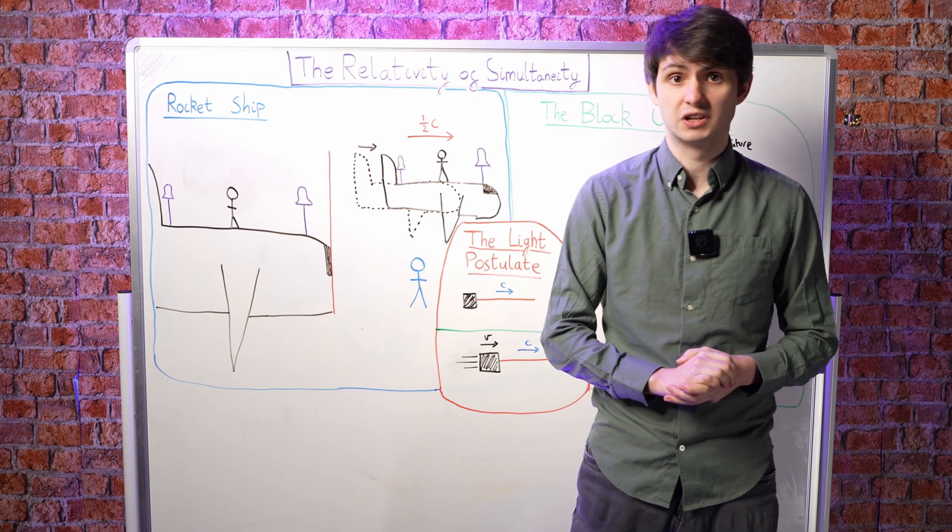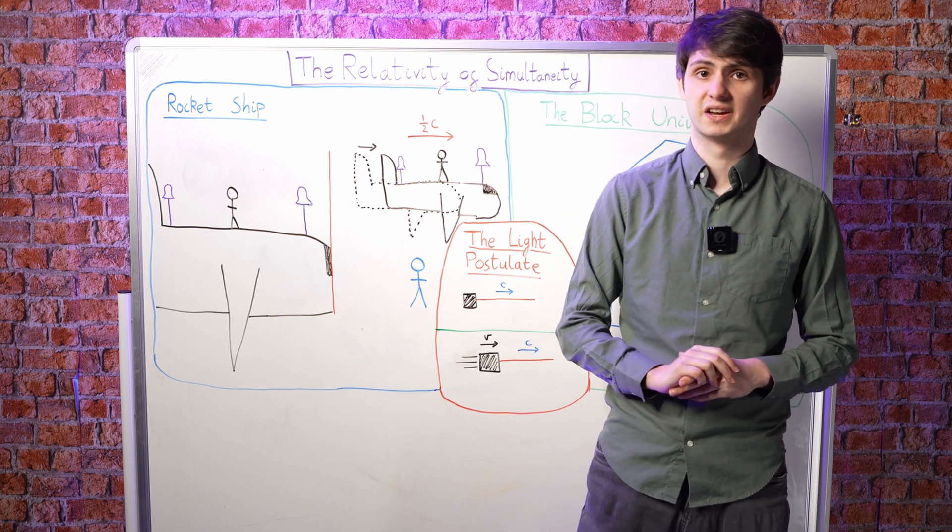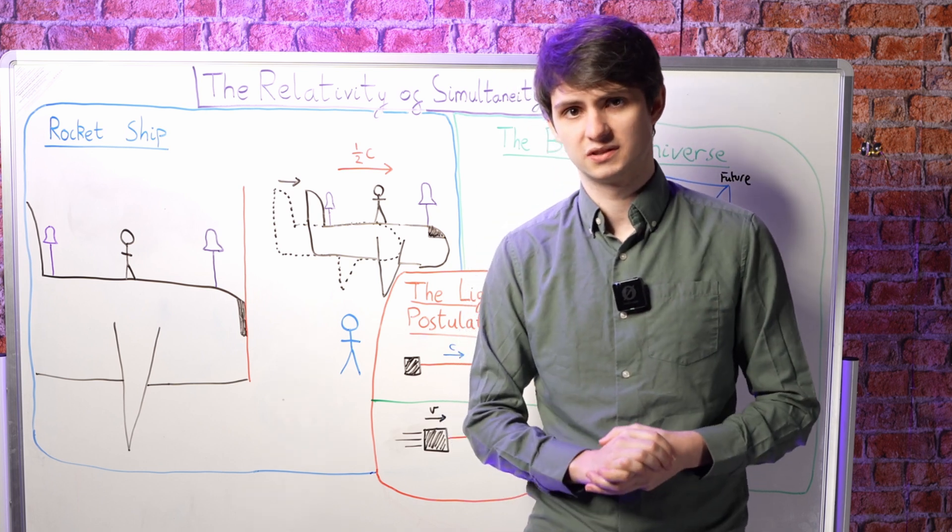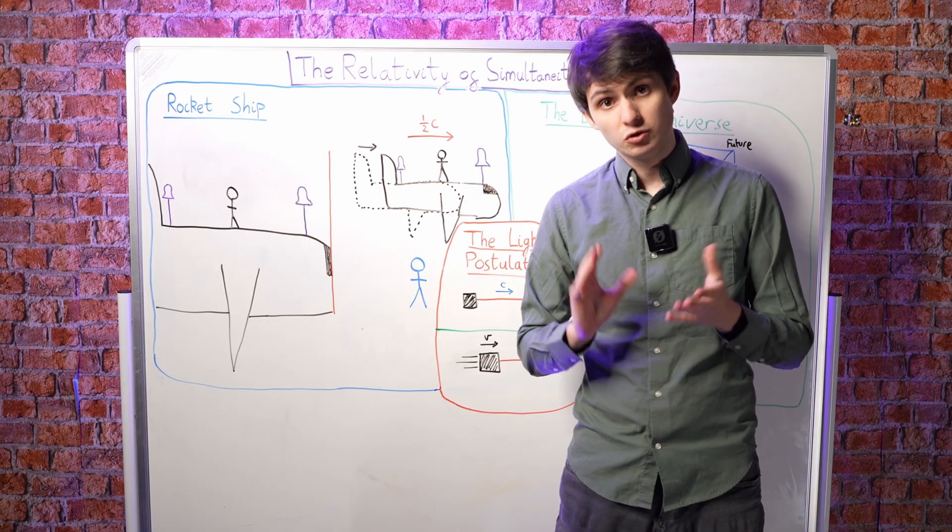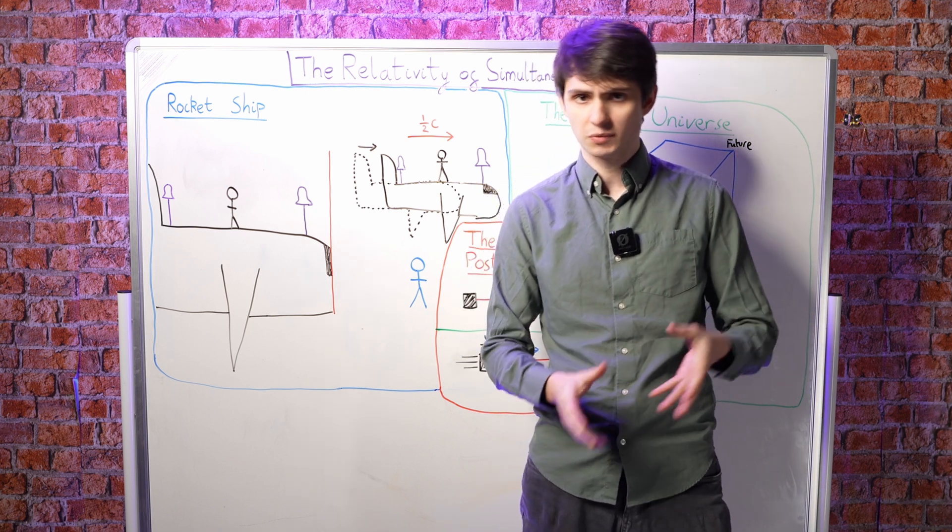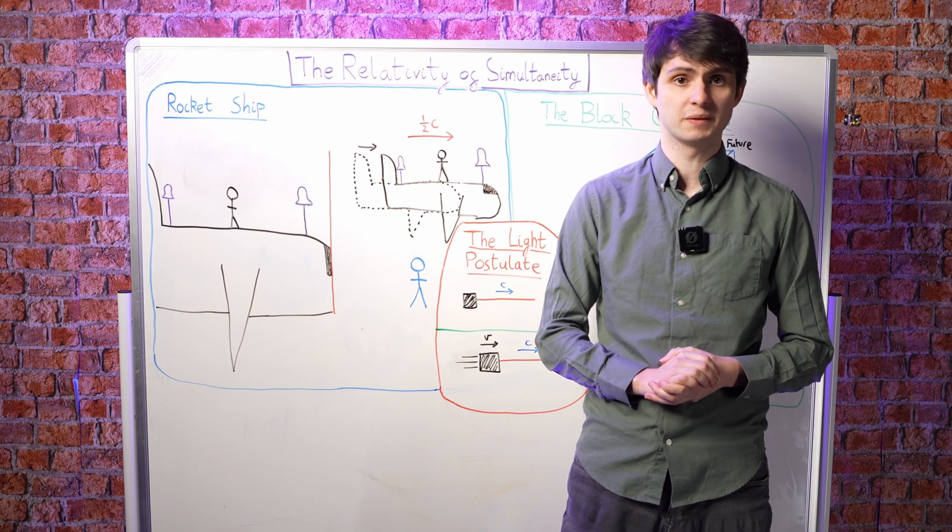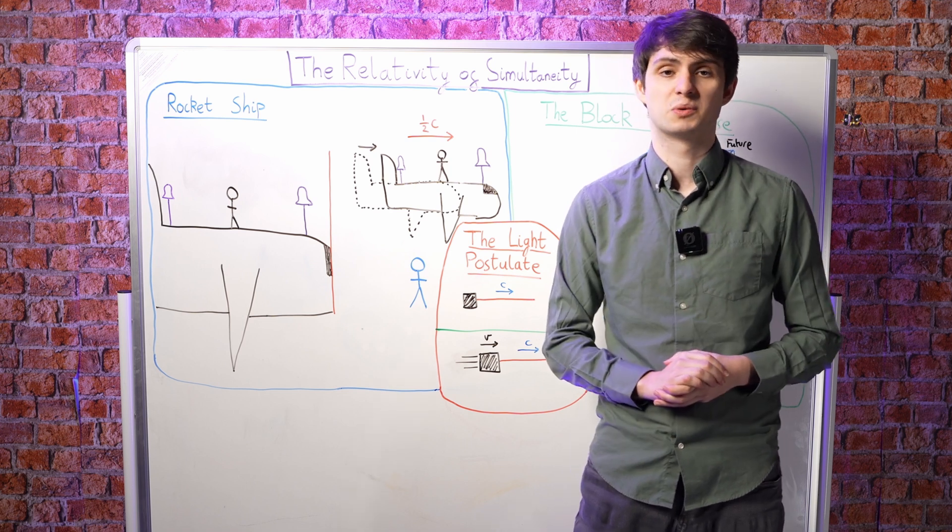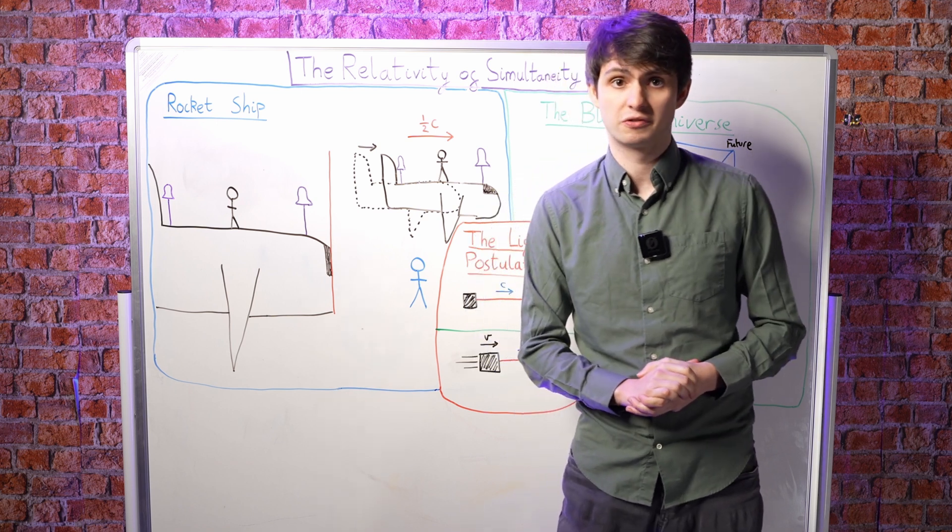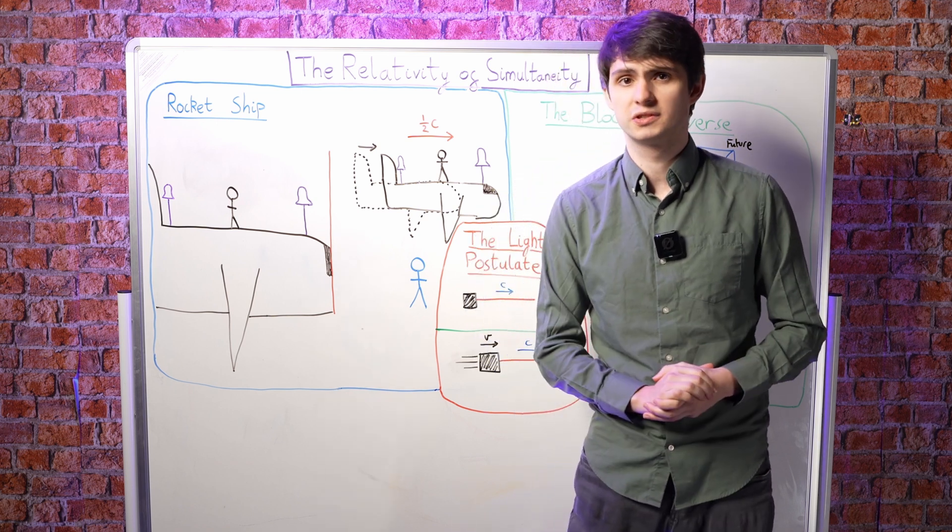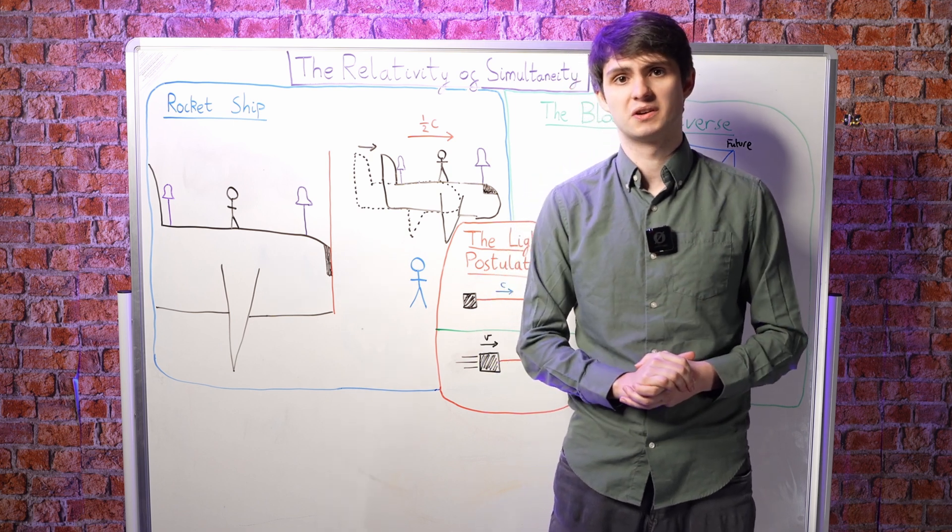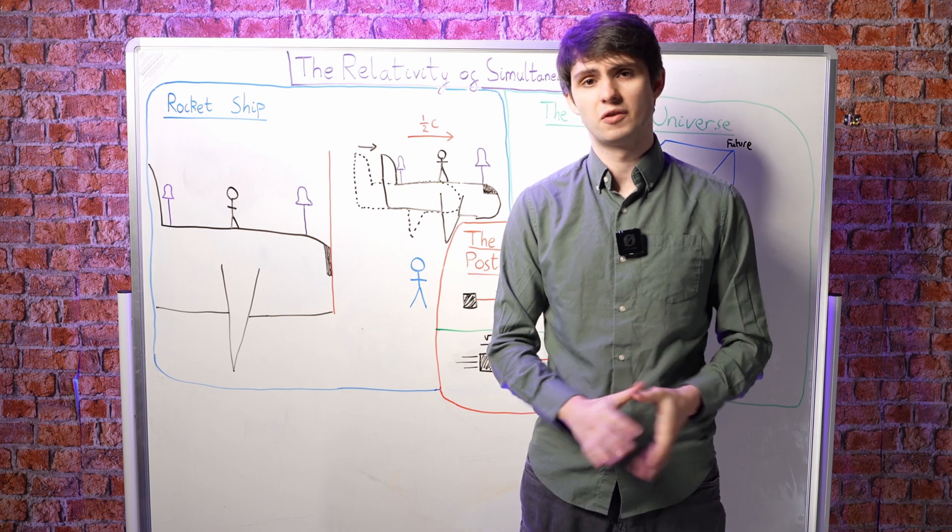You may have seen in other videos a similar thought experiment to the one we'll be describing today, but these other videos rarely seem to emphasize its truly bizarre consequences. If you know anything about relativity, you've probably come across ideas such as the constancy of the speed of light, time dilation, where time slows down based on how fast an object is moving, or the famous relationship between energy and mass, E equals mc squared. These are all fantastically mind-bending and revolutionary ideas, but there's one consequence of relativity above all the others that completely shatters an aspect of our experience that we take for granted: the existence of a now.